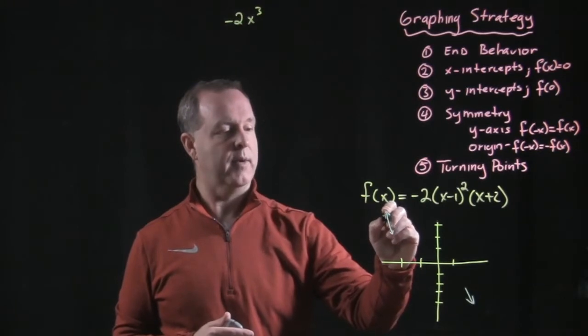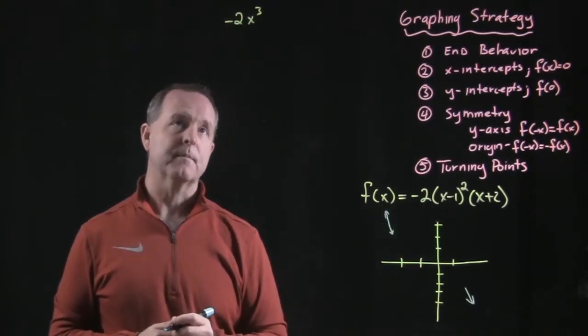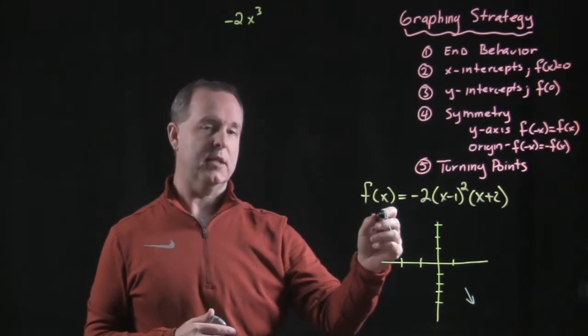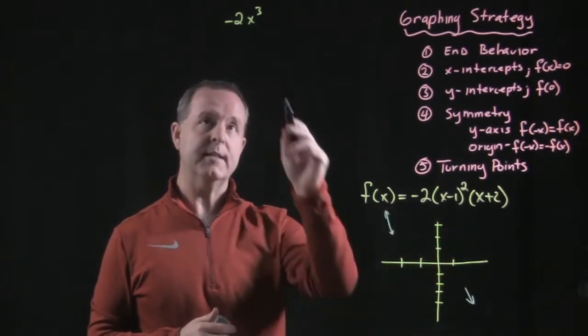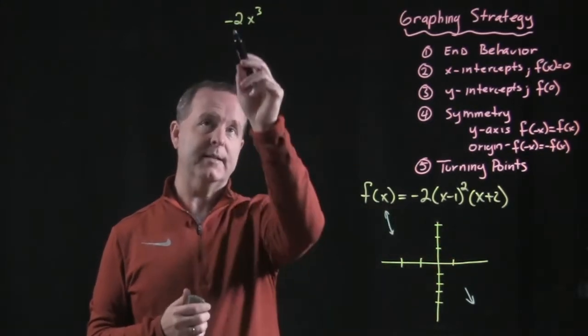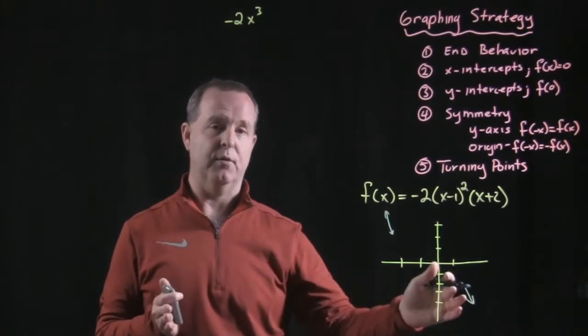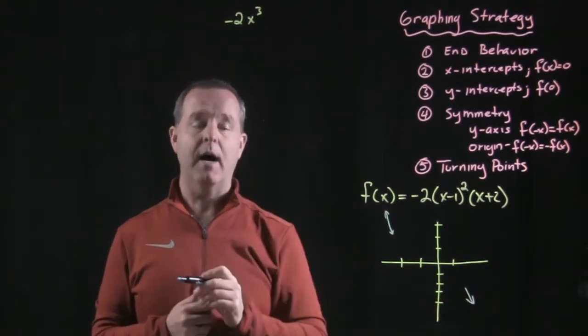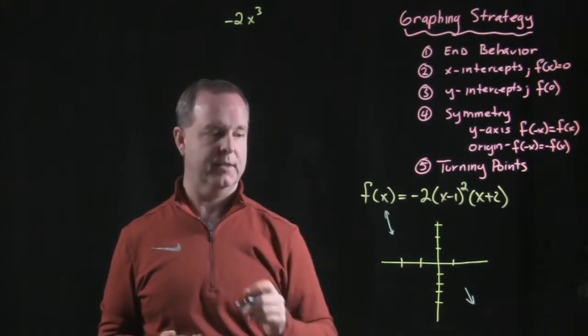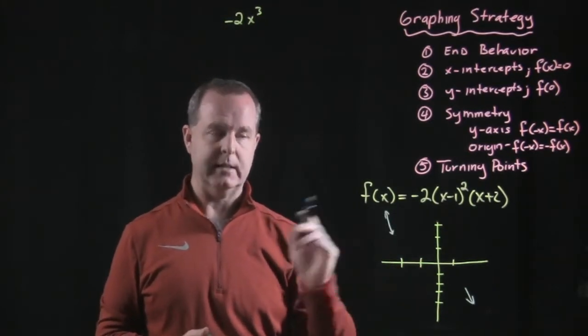I guess it goes both ways too. So it's odd. So it tells me it goes from left to right, it decreases, and it's negative. Well, because it's negative, it decreases left to right. Because it's odd, it tells me that my end behaviors don't match. One is high, one is low.